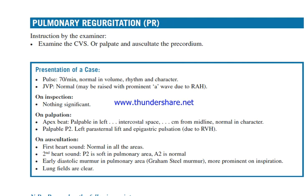Palpable P2. Left parasternal lift and epigastric pulsation due to right ventricular hypertrophy. On auscultation: first heart sound normal in all areas; second heart sound — P2 is loud in the pulmonary area; A2 is normal. Early diastolic murmur in the pulmonary area — Graham Steell murmur — more prominent on inspiration. Lung fields are clear.